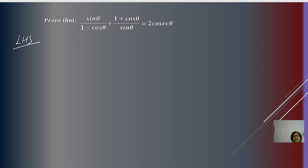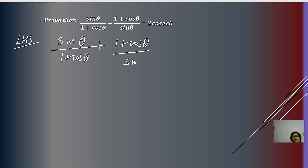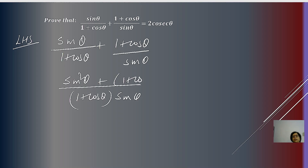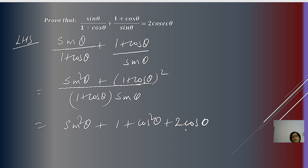For the first application, the left-hand side is sin θ/(1 + cos θ) + (1 + cos θ)/sin θ. Taking the LCM, which is (1 + cos θ)·sin θ, this becomes [sin²θ + (1 + cos θ)²] divided by the LCM. Expanding (1 + cos θ)² using the (a + b)² formula gives sin²θ + 1 + cos²θ + 2cos θ in the numerator, divided by (1 + cos θ)·sin θ.